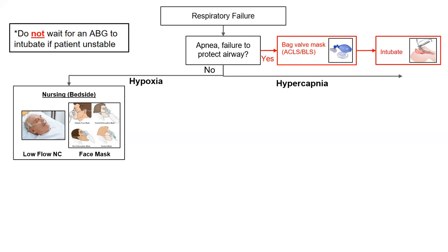The venturi mask is really only used for hypoxia in a COPD patient when you want to keep their oxygen in a narrow range. COPD patients should always be 88–92%, otherwise they get worsening V/Q mismatch and worsening hypercapnia. The venturi mask does something called jet mixing, which keeps their FiO2 at the same rate at all times no matter how fast they're breathing.